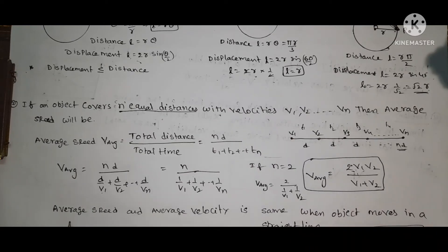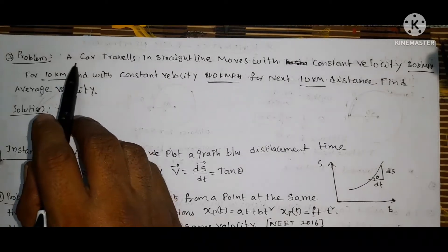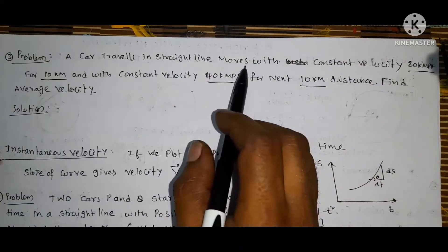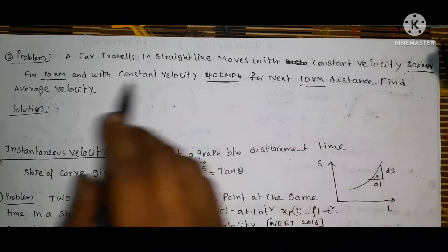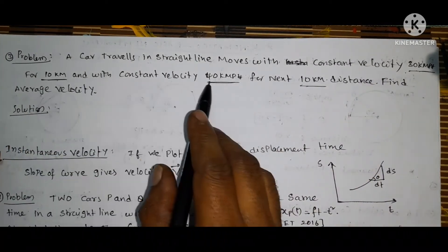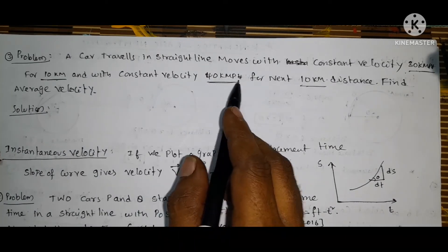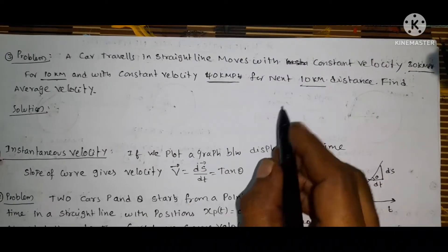Remember: average speed and average velocity are the same when the object moves in a straight line. Problem: a car travels in a straight line at 30 km/h for 10 km and then at 40 km/h for the next 10 km. Find the average velocity.